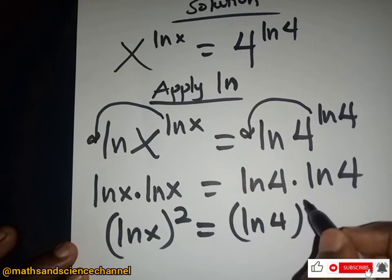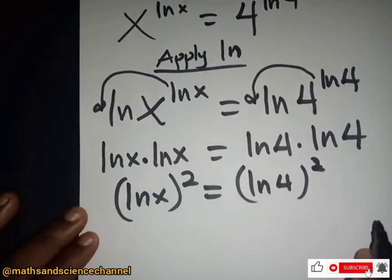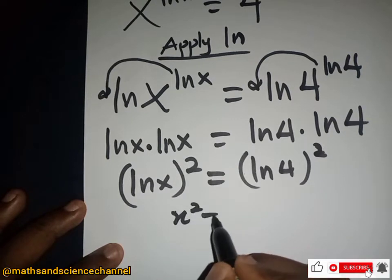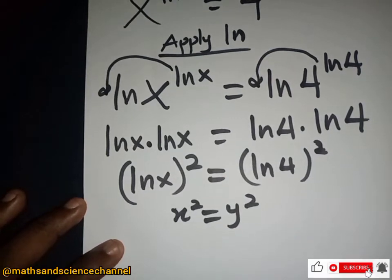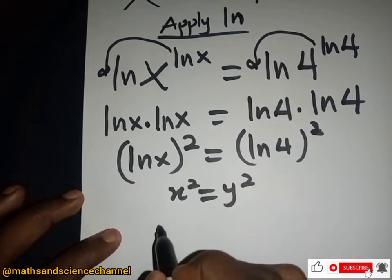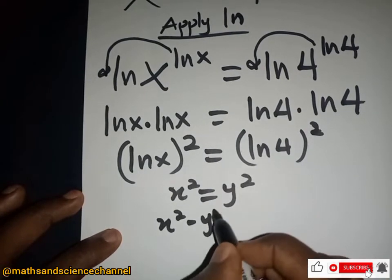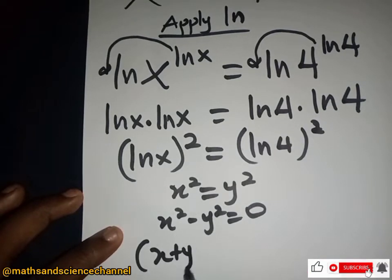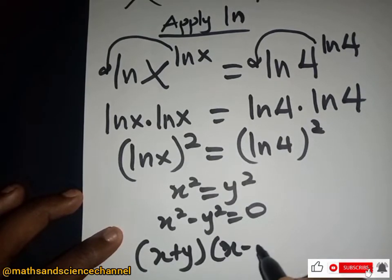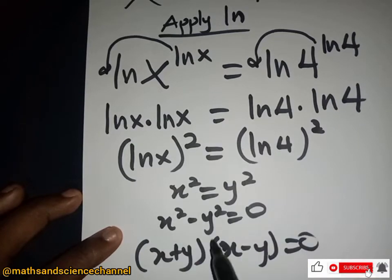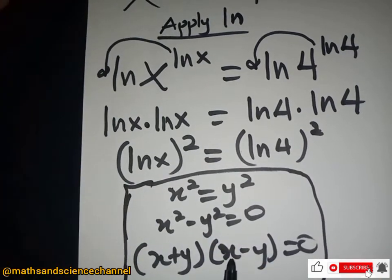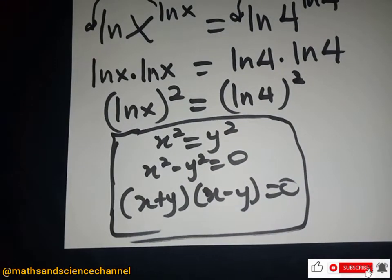Since we have doubles on each side, we get (ln x)² equal to (ln 4)². Now if we have s² equal to y², bringing everything to one side gives s² minus y² equal to zero, which factors as (s + y)(s − y) equal to zero. We use this same property here.